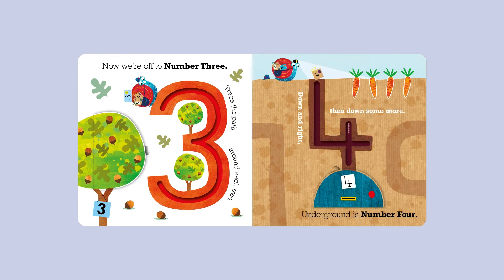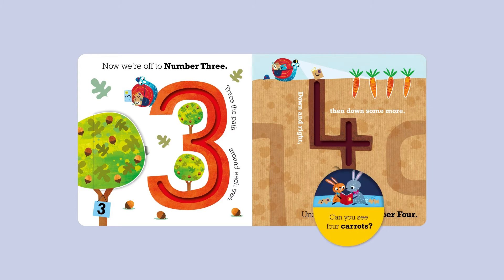Down and right, then down some more — underground is number four. Can you see four carrots?